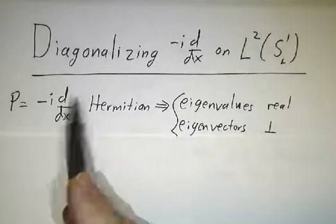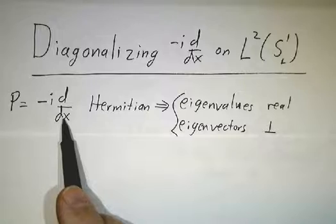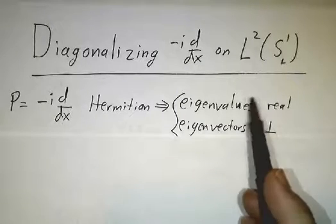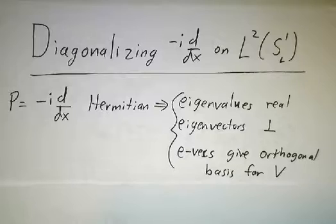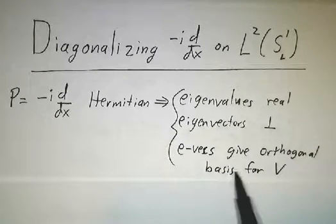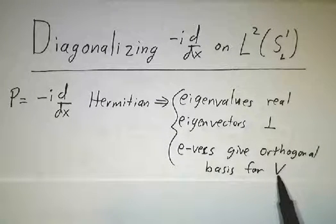Because we worked out previously that minus i times the first derivative is Hermitian, so the eigenvalues are real, the eigenvectors are orthogonal, and the eigenvectors give an orthogonal basis for the entire vector space.